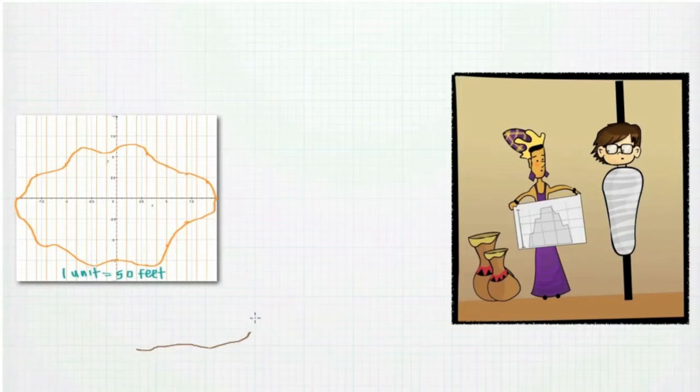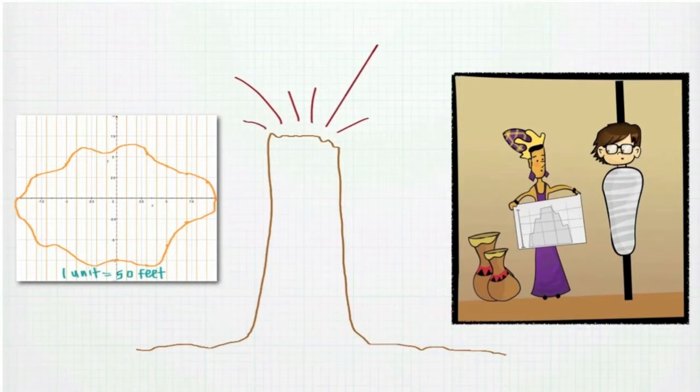Since the cross-sectional area of the volcano is constant, Willis can find the volcano's volume by taking the area of a cross-section, and then multiplying his answer by the volcano's height.